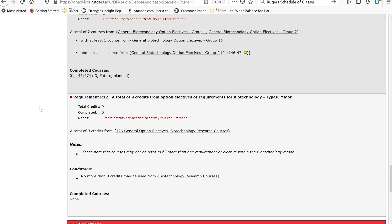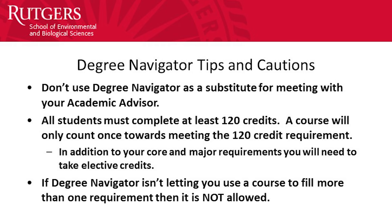I hope you've got the hang of using Degree Navigator now — it's really a great tool to keep you organized and on track to complete your degree at Rutgers. I'll leave you with a few Degree Navigator tips and cautions. Don't use Degree Navigator as a substitute for meeting with your academic advisor. Your academic advisor can help you determine the best courses for your specific career goals. Sometimes you can use courses to fill more than one requirement, but just because you can doesn't mean you can count the credits twice.